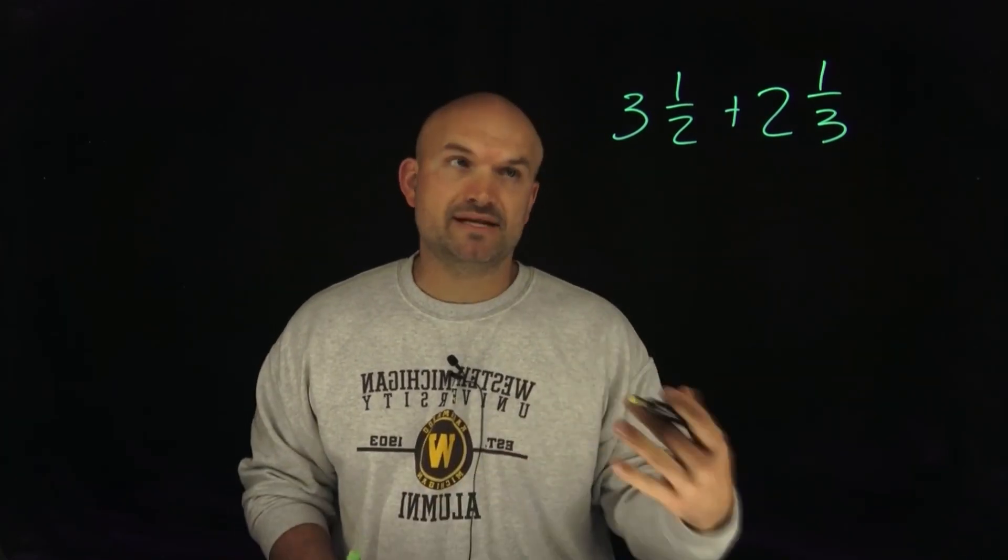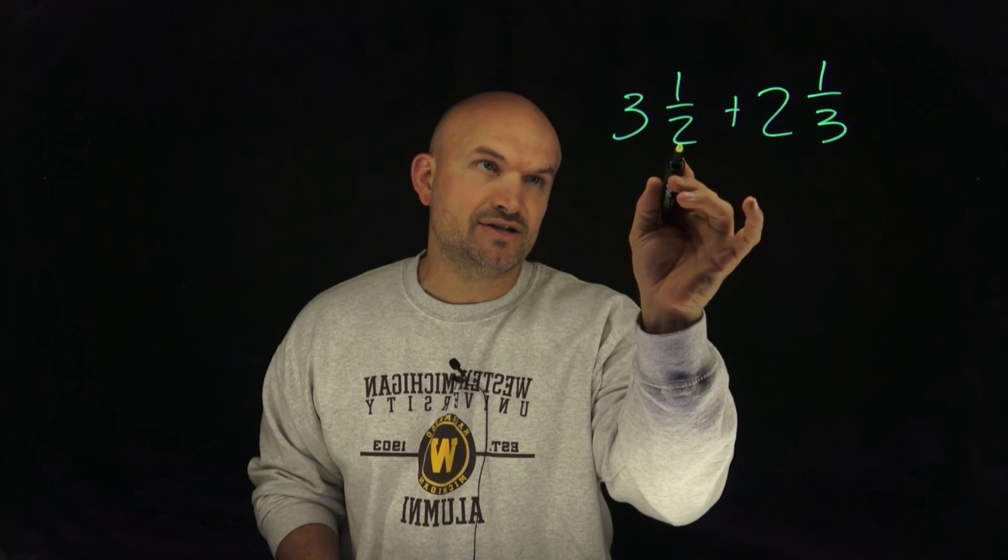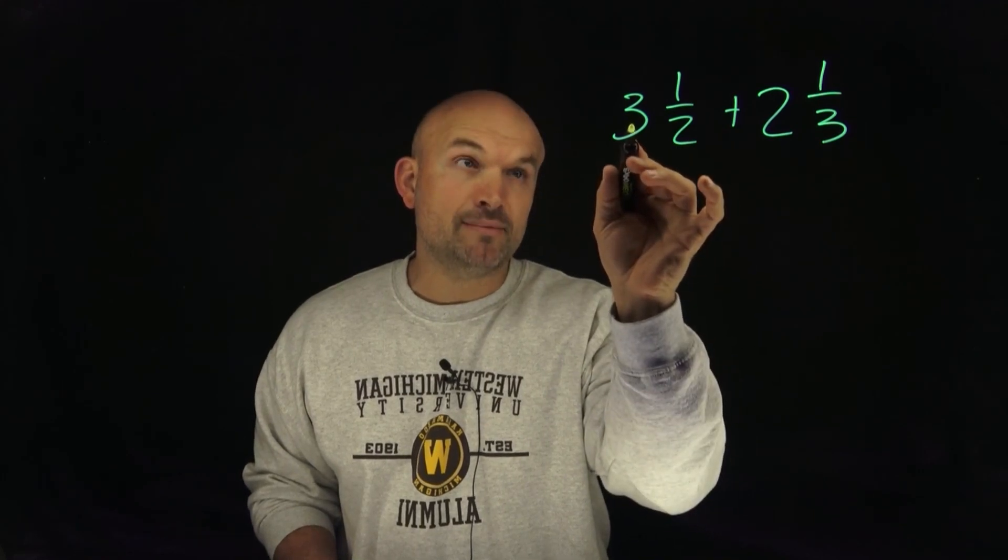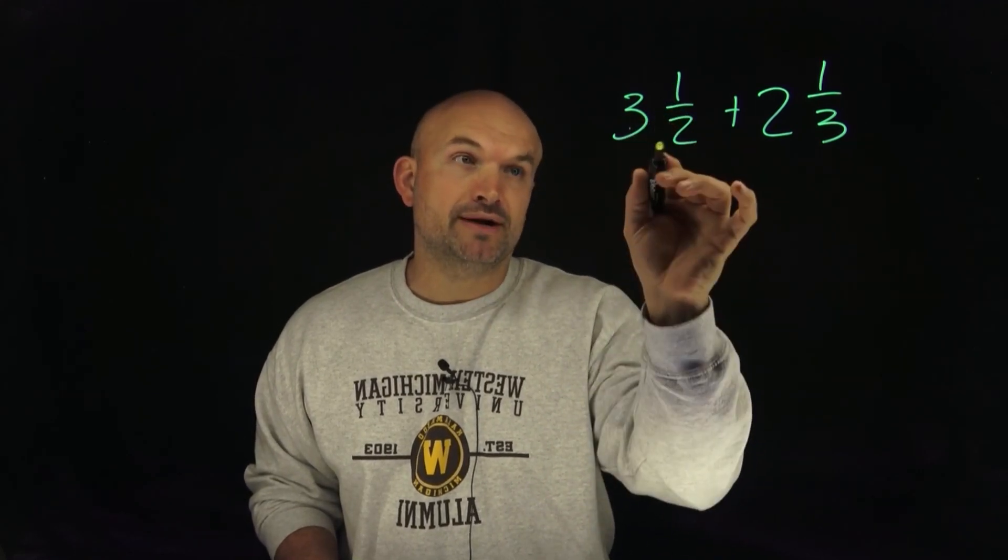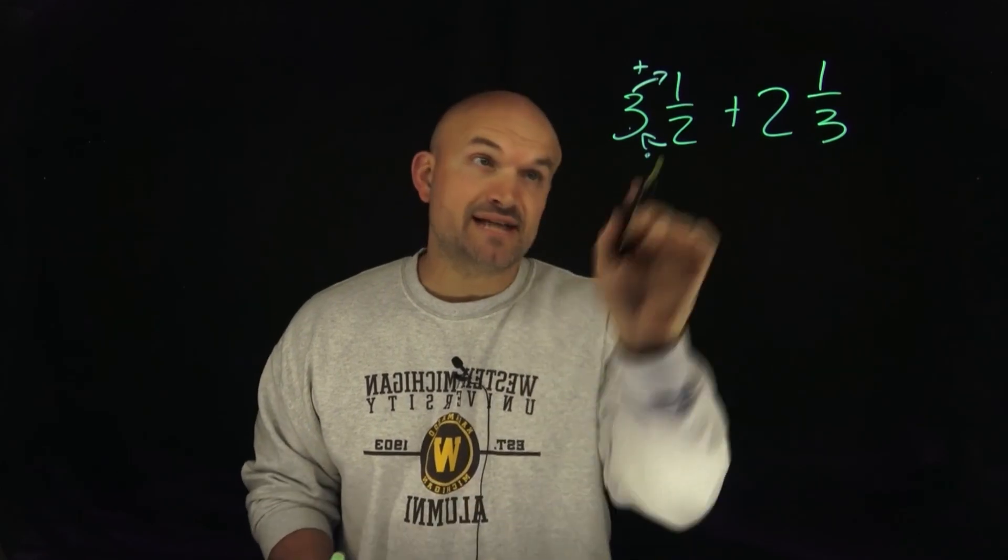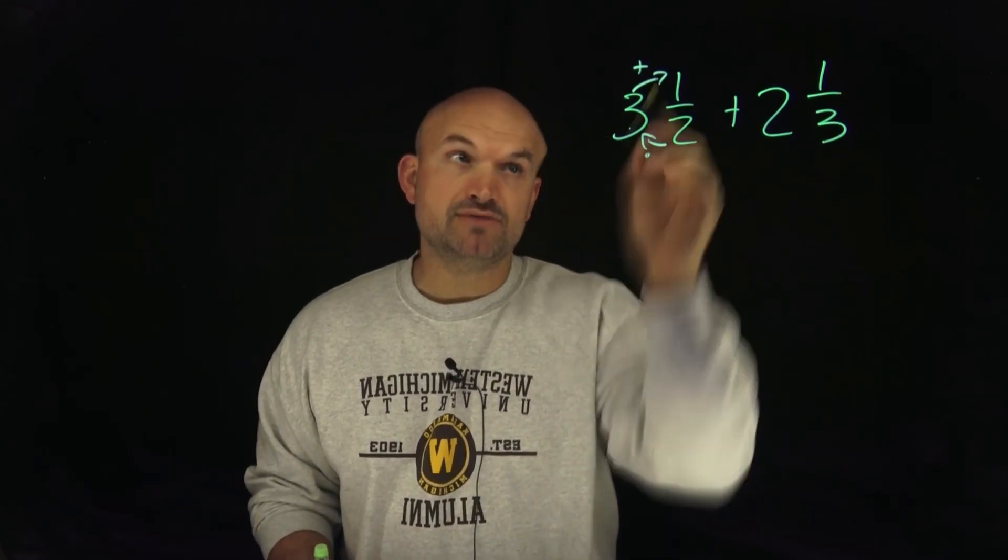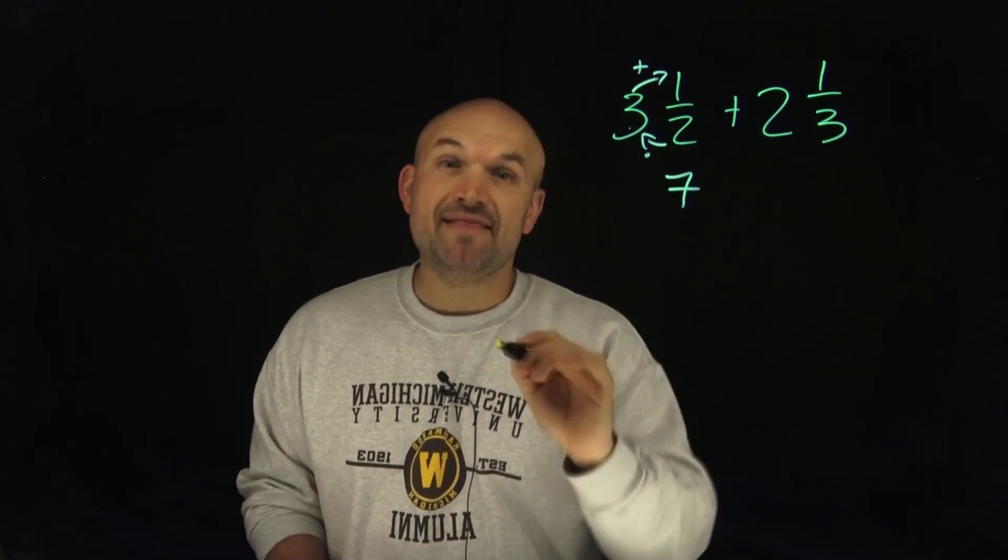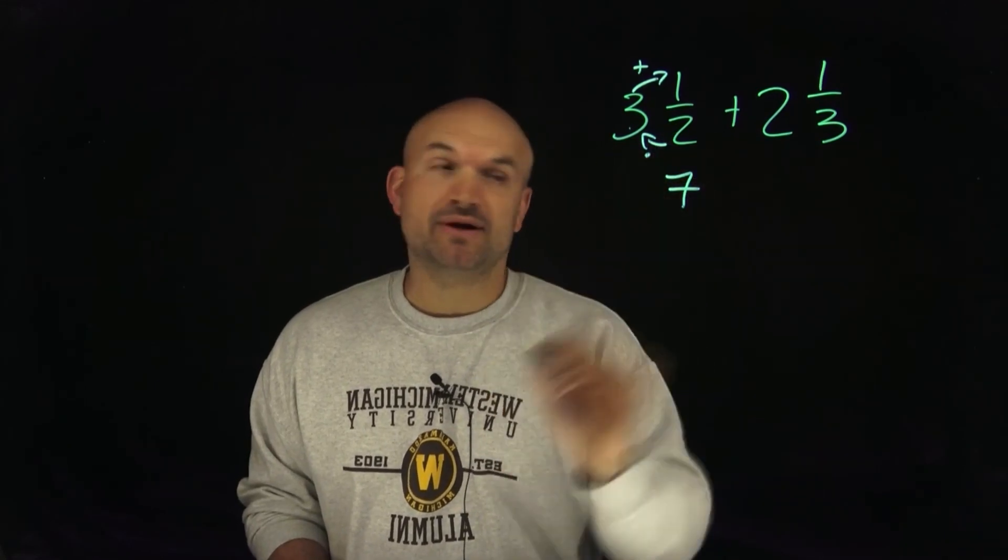All we need to do to write a mixed number into an improper fraction is take our denominator, multiply by our whole number, and then add it to our numerator. So in this case, I have 2 times 3, which is 6, plus 1 is going to give me 7, and then you put it over your same denominator as your fraction.